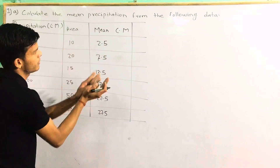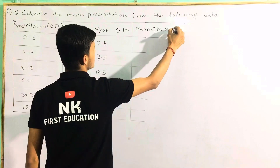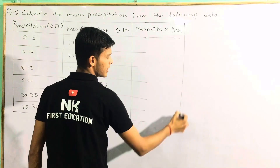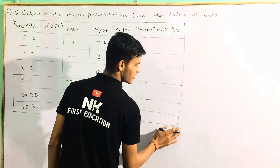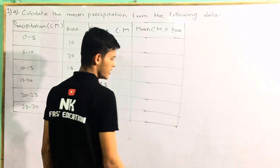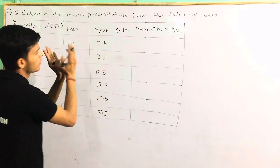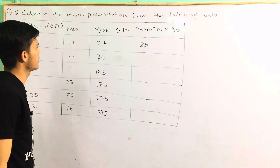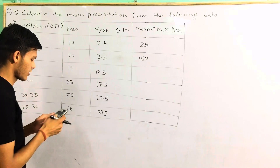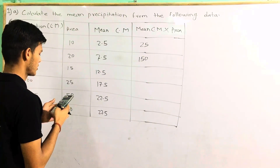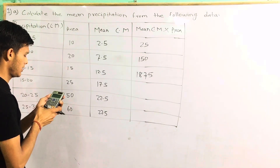Now, what do we do? We multiply this. What do we do? Midpoint cm into area. We will do the same thing. Now, look at the area. We are going to focus here. See the area. This is the main area. We are going to locate the area. This is the type of area: 1.5, 25, 17.5.